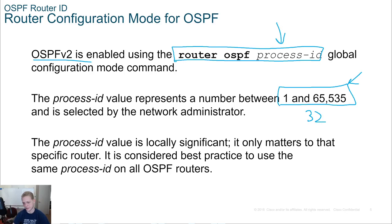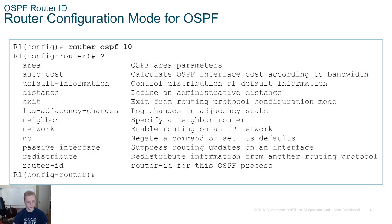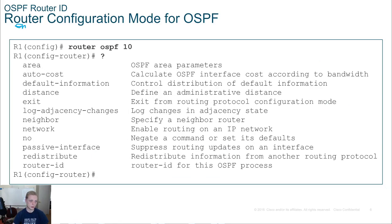They don't allow you to use zero, so the process ID range starts at 1. The process ID value is locally significant - it doesn't matter to any other router, only the one it's configured on. It's usually best practice to use the same process ID across all routers unless you need multiple processes, which you can run, but most organizations won't need that. This is what it looks like in configuration mode: enable, configure terminal, then 'router ospf' followed by your process ID - in this example it's 10.